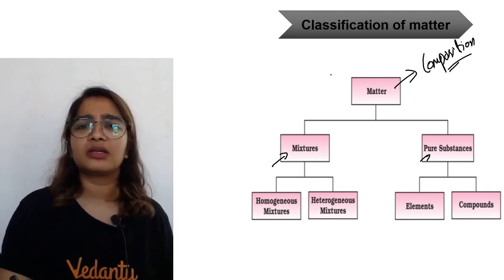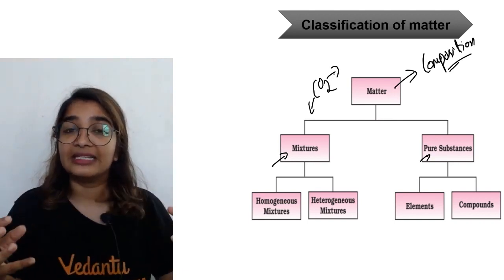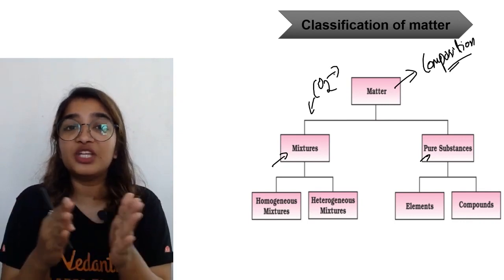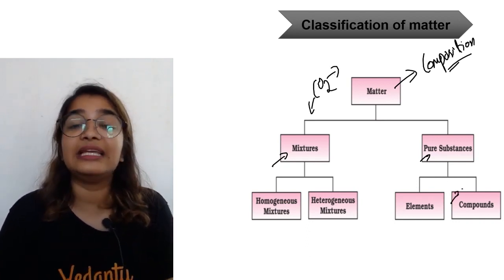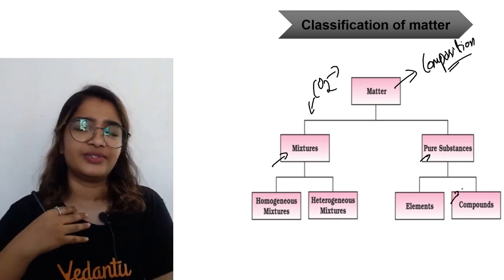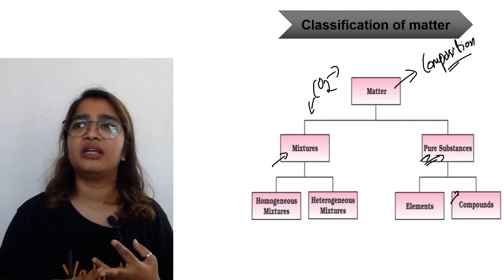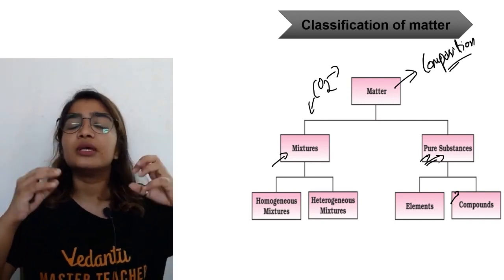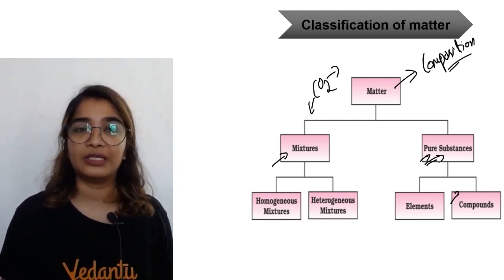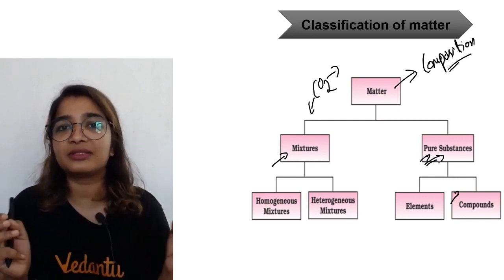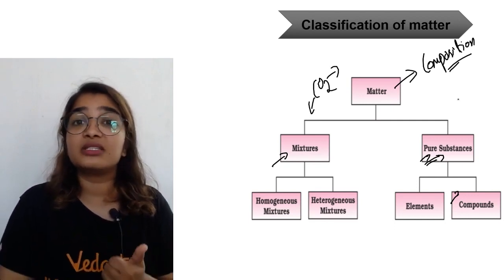You might wonder why carbon dioxide, which has carbon and oxygen, is still a pure substance. It's because when CO₂ is formed, there is a chemical combination — carbon and oxygen are not just physically mixed; there is some kind of interaction. That is why compounds like CO₂, CH₄, and NaCl are all pure substances. Mixtures, on the other hand, include tea, lemonade, sugar in water, salt in water, and ink in water — these are mixtures because they can be mixed in any ratio, unlike pure substances where the ratio is fixed.